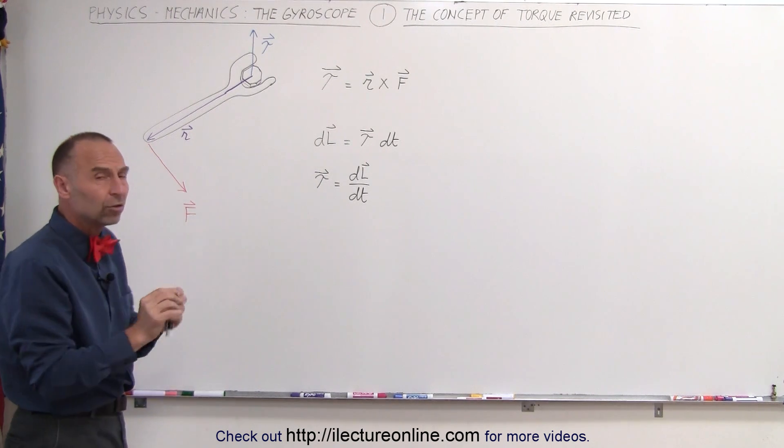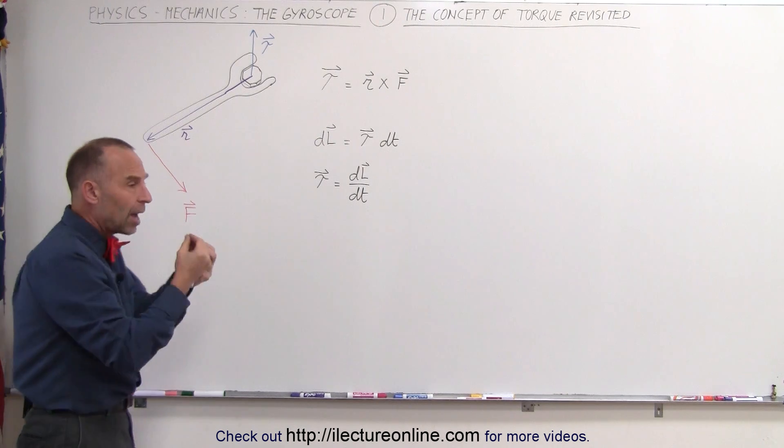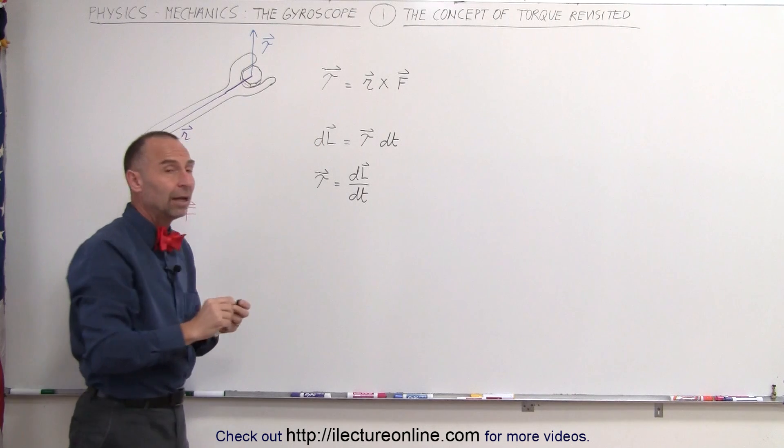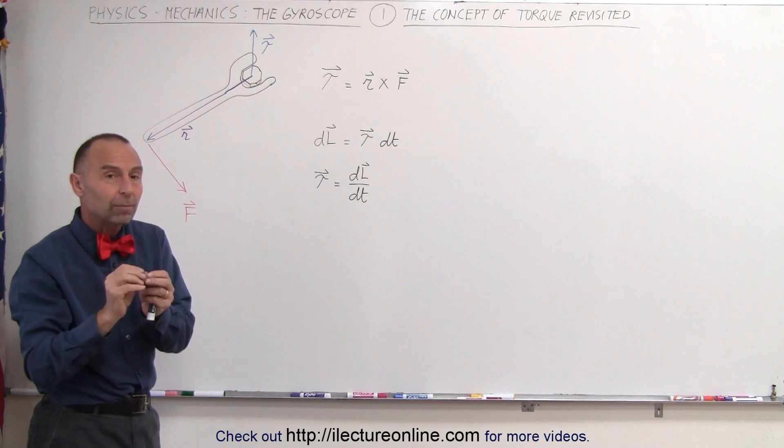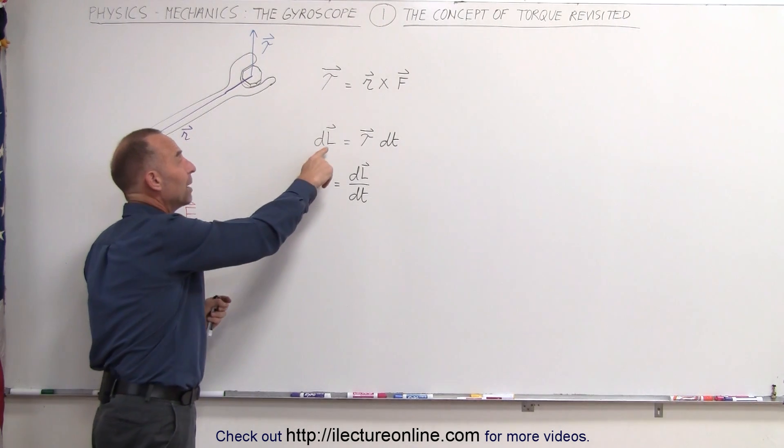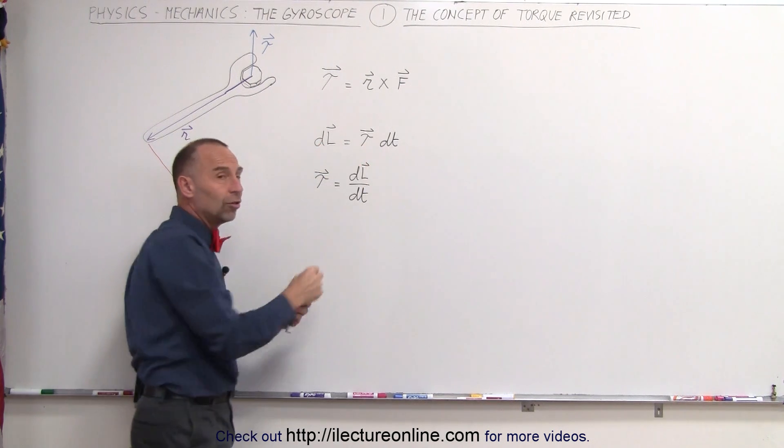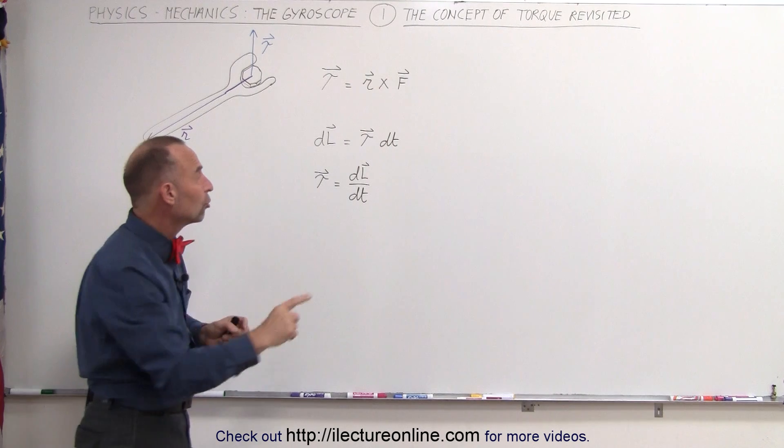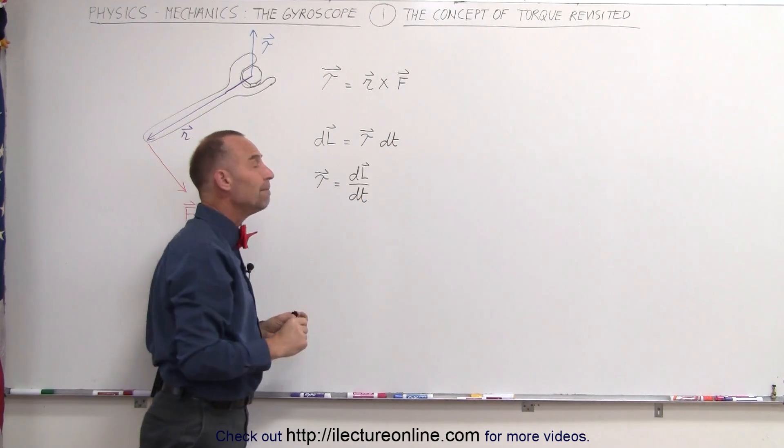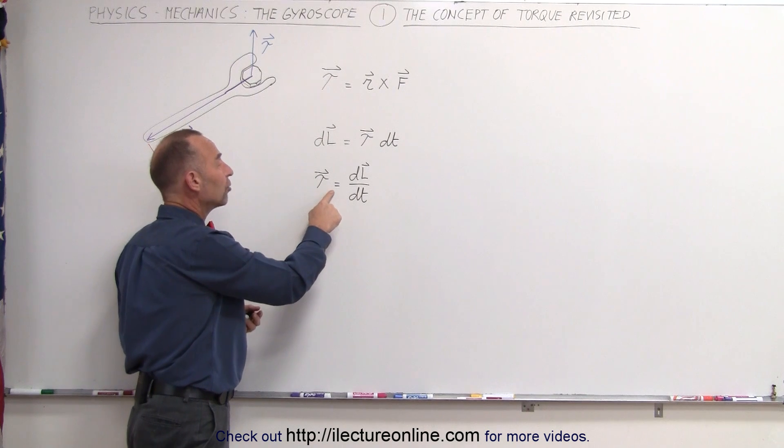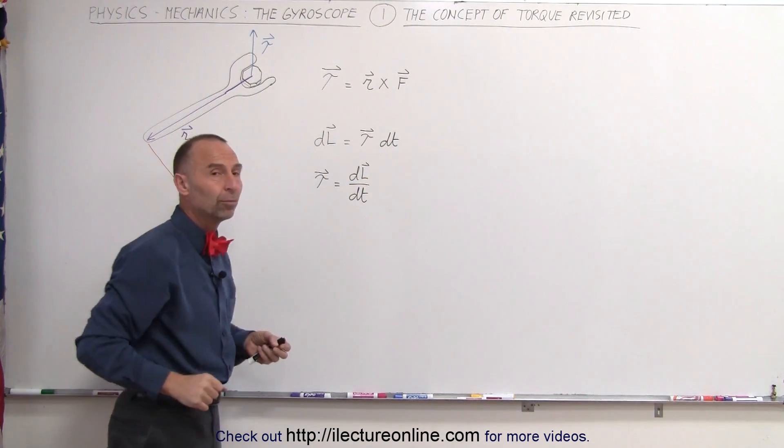The reason why it becomes important is because there's a relationship between an object that has angular momentum, indicated by this L right here. We can see that if a torque is applied to an object that has angular momentum, the change in the angular momentum will be equal to not just the magnitude of the torque, but also the direction of the torque times dt. And if you solve that equation for the torque, you can see that the torque causes a change in the angular momentum per unit time.